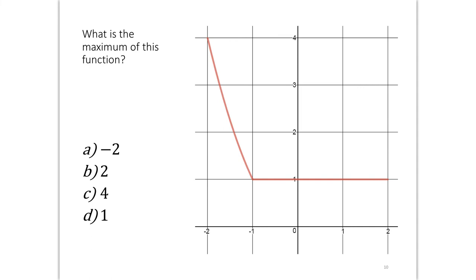Clicker question: what is the maximum of this function — −2, 2, 4, or 1? Pause the video and give it a try. Looking at the graph, the highest point is clearly visible. When asked for the maximum, they mean the y-value. The maximum value of the function is 4. If asked where it occurs, it occurs at x = −2, but the maximum value itself is 4.